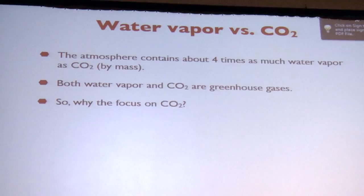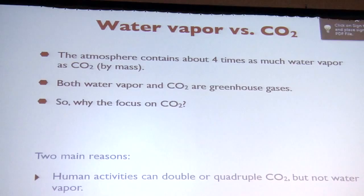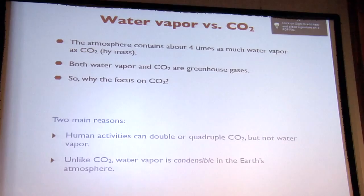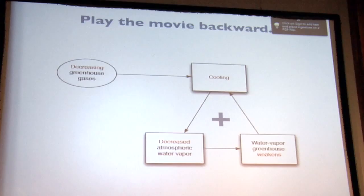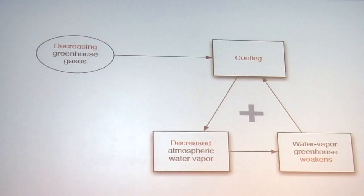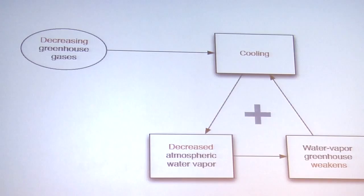So, why do we talk mostly about CO2 and not about water vapor? It's a fact that the atmosphere contains about four times as much water vapor as CO2 by mass. And both water vapor and CO2 are strong greenhouse gases. So, why are we talking about CO2? Well, mostly two reasons. One is that human activity can double or quadruple or worse the CO2 concentration of the air, but we can't double or quadruple the water vapor concentration of the air. That's not possible. The temperature won't allow it. The second point is that, unlike CO2, water vapor is condensable. It can change phase. We talked about this already.